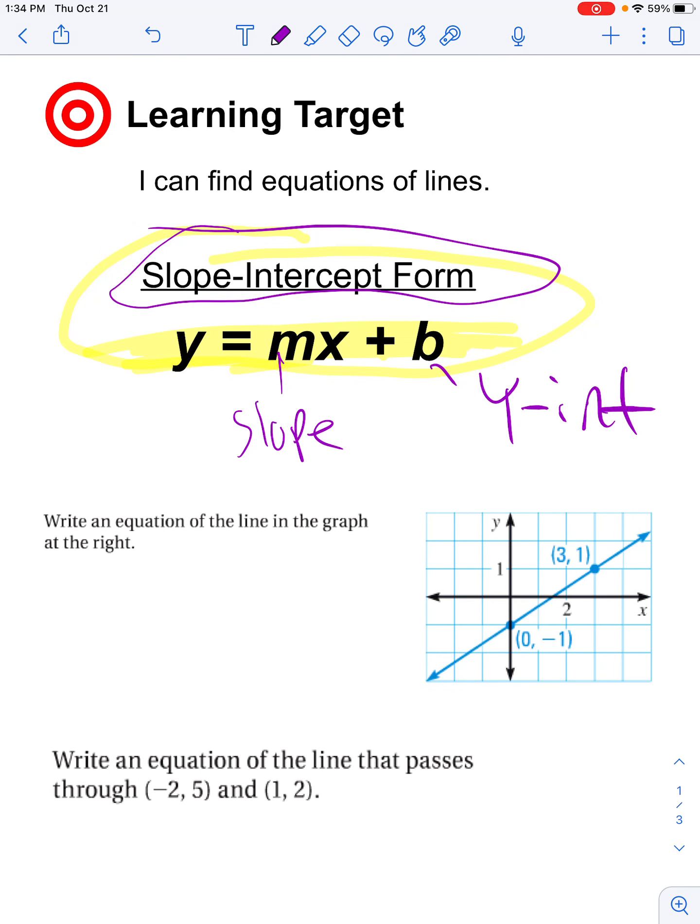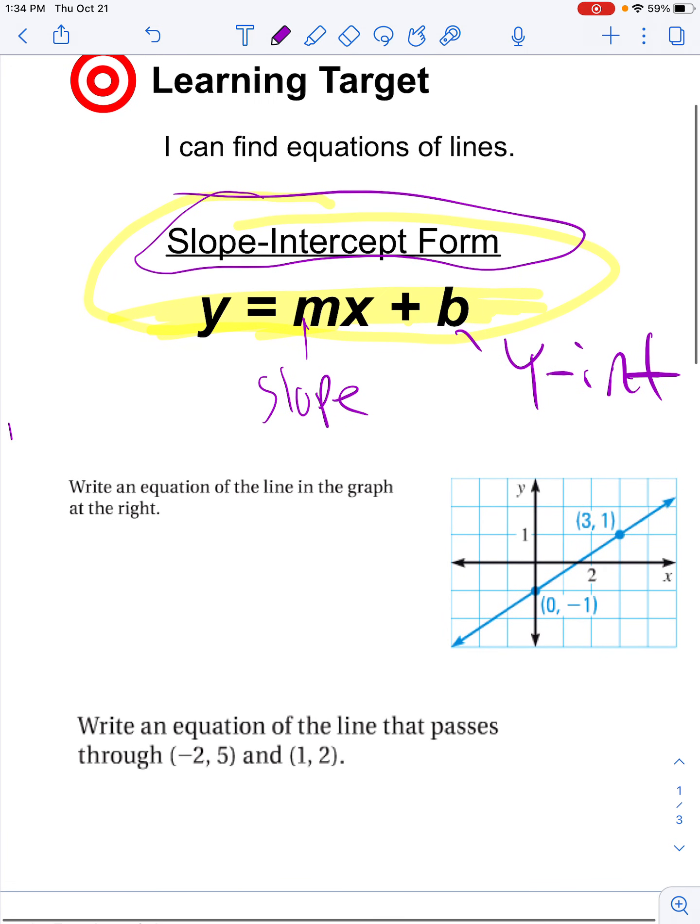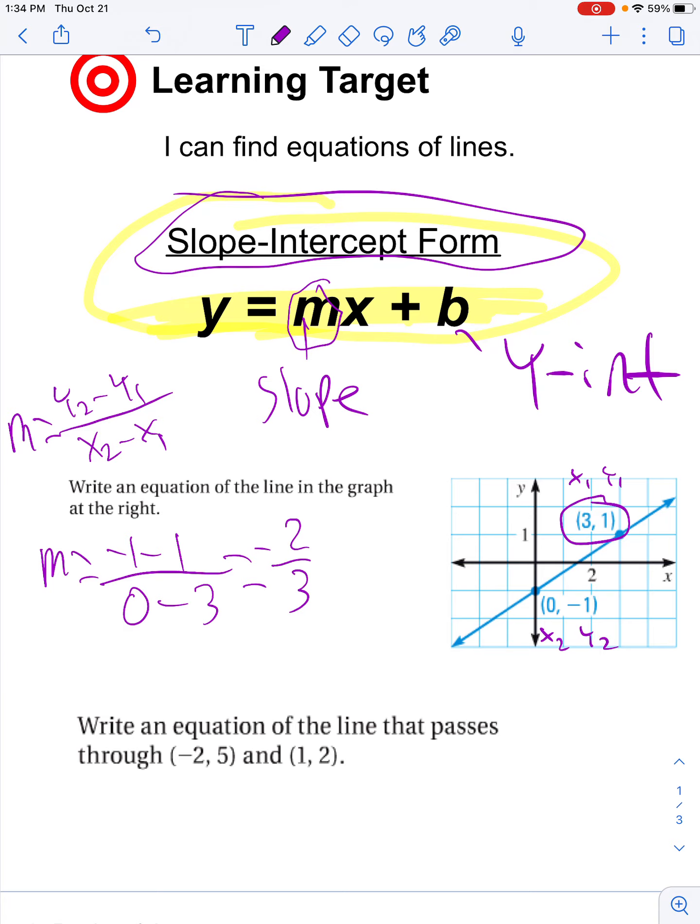Write an equation of the line in the graph at the right. So again, in order to find slope, I've got an equation where I take my y values. Slope is rise over run, change in y over change in x. So I can take these values, which I'm going to call x1, y1, and x2, y2, and I'm going to start by subtracting them. So my y2 is negative 1 minus positive 1, and my x2 is 0 minus 3. So this gives me negative 2 thirds. Awesome.